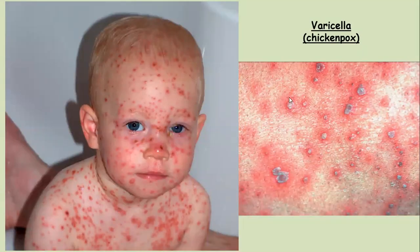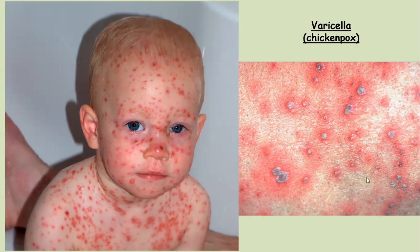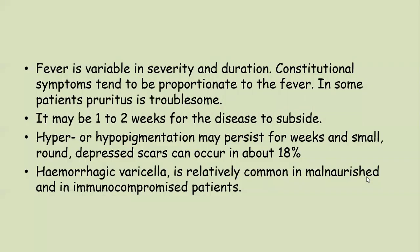In typical varicella, you can see multiple vesicles and pustules on an erythematous base. Fever is variable in severity and duration; constitutional symptoms tend to be proportionate to the fever. In some patients, pruritus is troublesome. It may take one to two weeks for the disease to subside. Hyperpigmentation and hypopigmentation may persist for weeks, and small round depressed scars occur in about 18% of patients. Hemorrhagic varicella is relatively common in malnourished and immunocompromised patients.